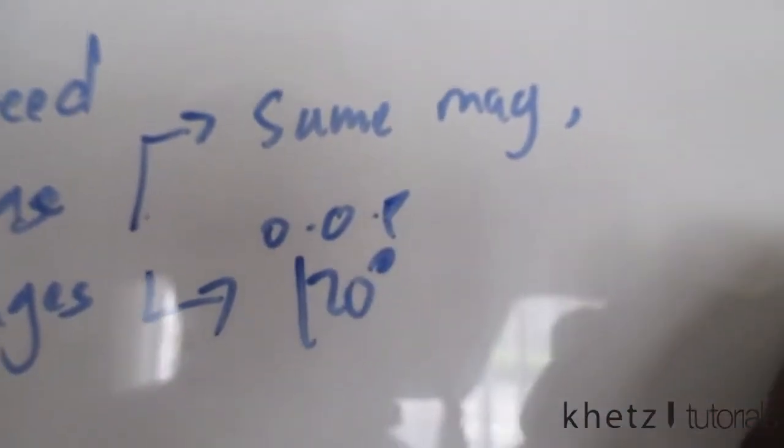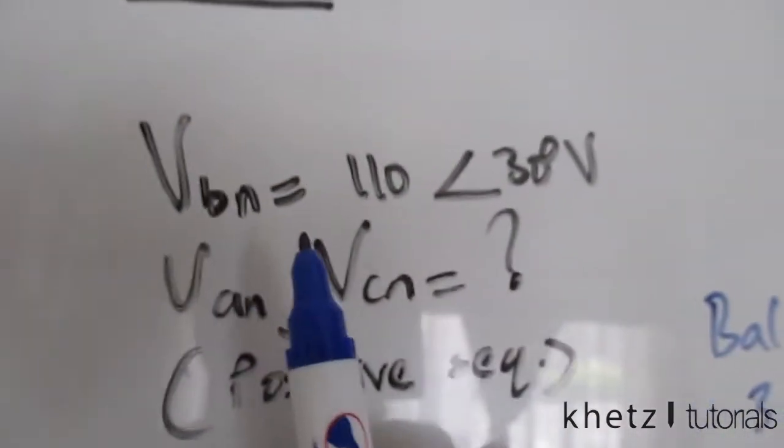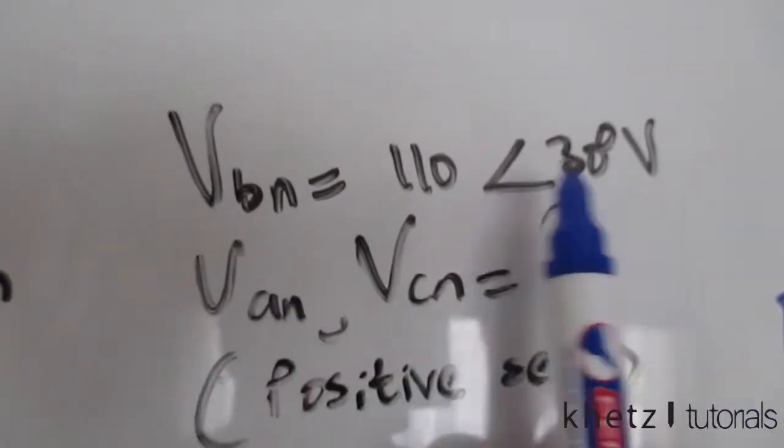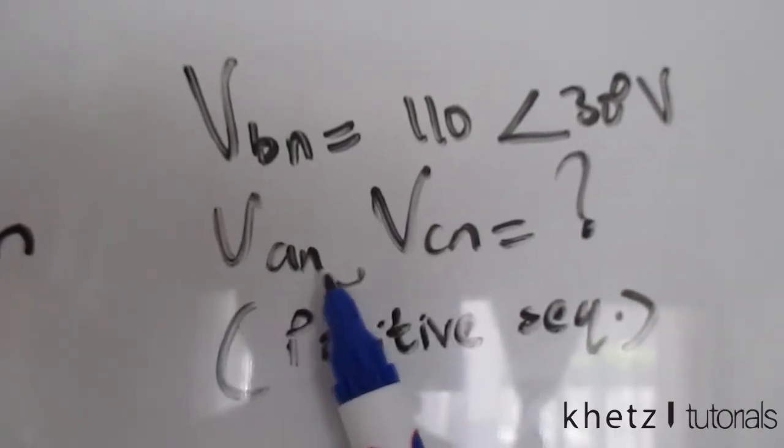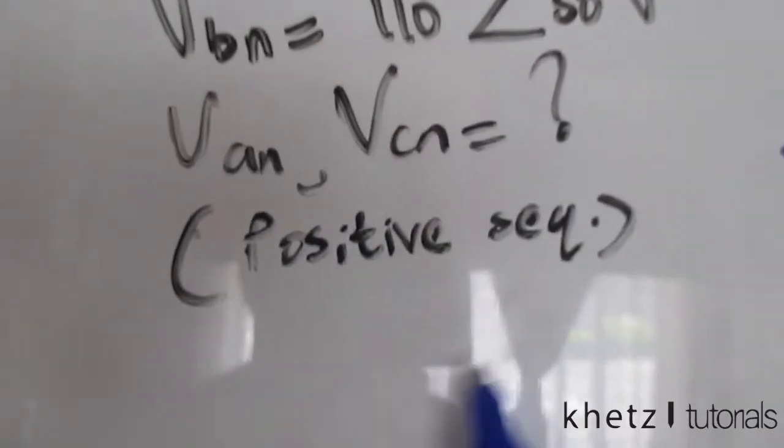They gave us this VBN and they asked us to find VAN and VCN assuming a positive sequence which is the ABC sequence.